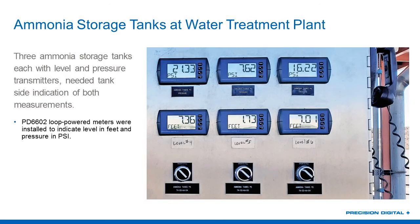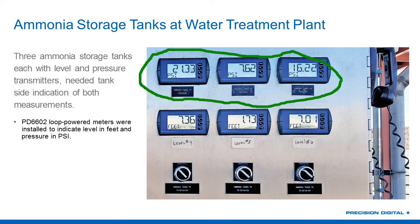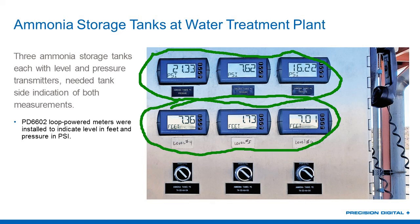This next application is at a water treatment plant. We see six of our loop leaders — our PD-6602 loop leaders — with a very nice 14-segment, very legible display. These are being used for three pressure readings in PSI, and then the bottom three are level, just reading out in feet. This time, feet and inches weren't needed. So six meters being used at this water treatment plant, obviously just taking the 4 to 20 milliamp — whether it's level, flow, pressure, temperature, or turbidity.